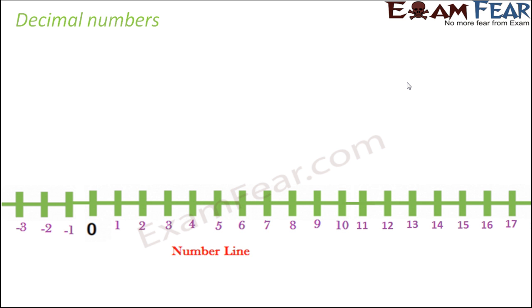So what are decimal numbers? These decimal numbers have a very close association with fractions. Why? Because decimal numbers give values of fractions. Let's take the example of a fraction like 1 by 2, where the numerator is smaller and the denominator is bigger. How do you locate 1 by 2 on the number line?